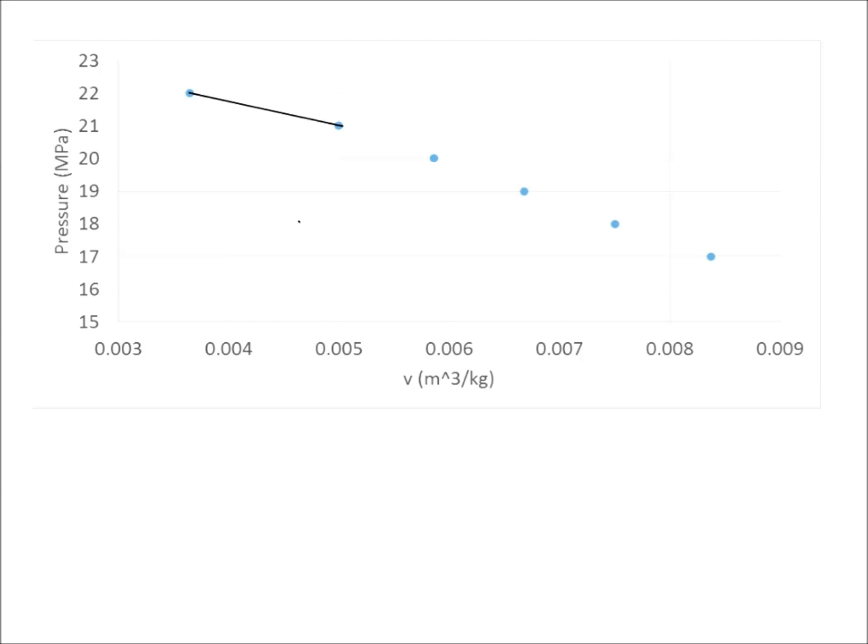We could assume that the two points that straddle the number where we want to find the pressure are connected by a straight line. Now, the actual function of specific volume versus pressure for saturated water vapor is not a linear function, but we can approximate it as a linear function between these two data points.